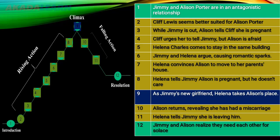In rising action six, we see part two in progress. Two weeks later, Jimmy, Alison, Cliff, and Helena are all living together. It is a tense situation — Helena and Jimmy are always at loggerheads, constantly arguing. However, the arguments end up creating romantic sparks, as the conflict causes the two of them to notice each other.